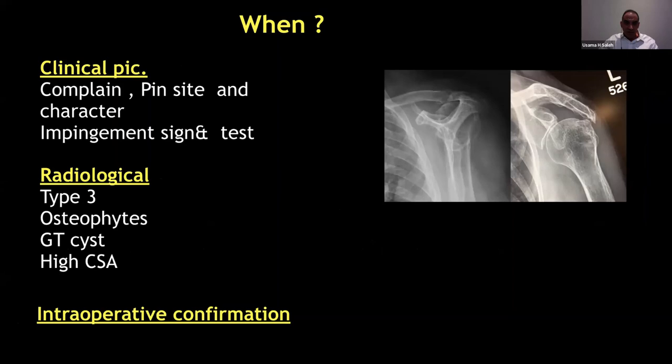In my practice I do it selectively, and I think most surgeons do the same. My indication requires three elements together: the clinical picture, radiological findings, and intraoperative confirmation. Clinically, the patient should complain of impingement pain, have a positive impingement sign and positive impingement test. Radiologically, there should be a type III acromion, osteophyte, greater tuberosity cyst, or high critical shoulder angle. Only if I confirm all of this intraoperatively do I go ahead with acromioplasty.